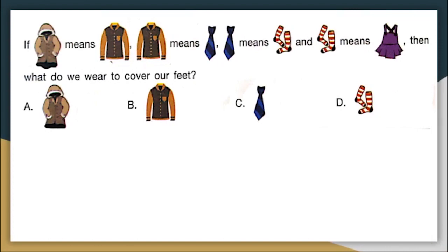If jacket means shirt, shirt means tie, tie means socks and socks means frock, then what do we wear to cover our feet? They are saying that a shirt is called a jacket. Similarly, tie is called shirt in this code language. Socks is called tie. So what do we cover our feet with? Obviously we cover our feet with socks, but here in this code, socks is called tie. So the answer we are looking for is option C, tie.